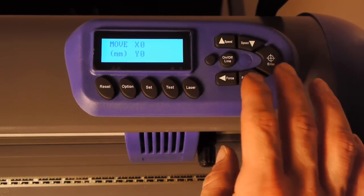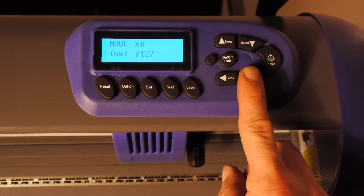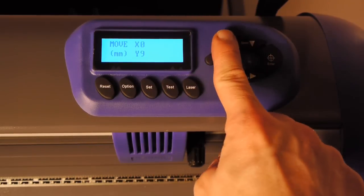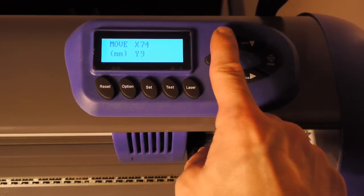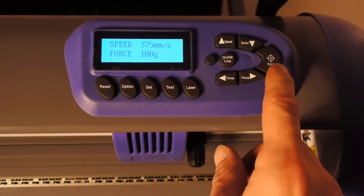To set the home origin or the starting point for your cutter, press the offline button. Then press the arrows. Left and right will move the carriage. Up and down will move the feed rollers in and out.